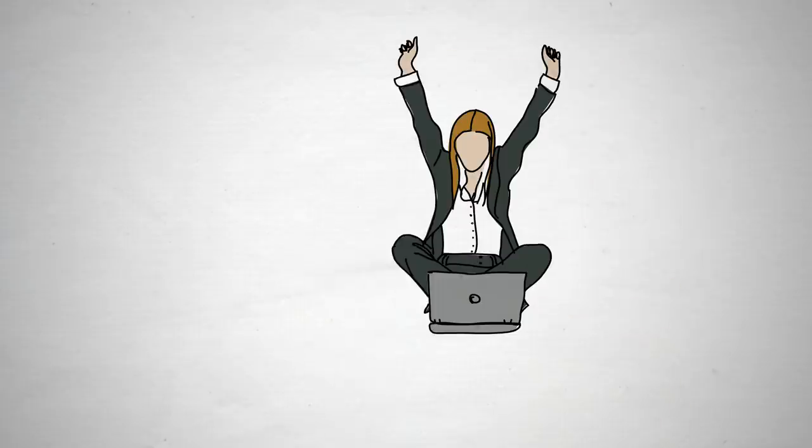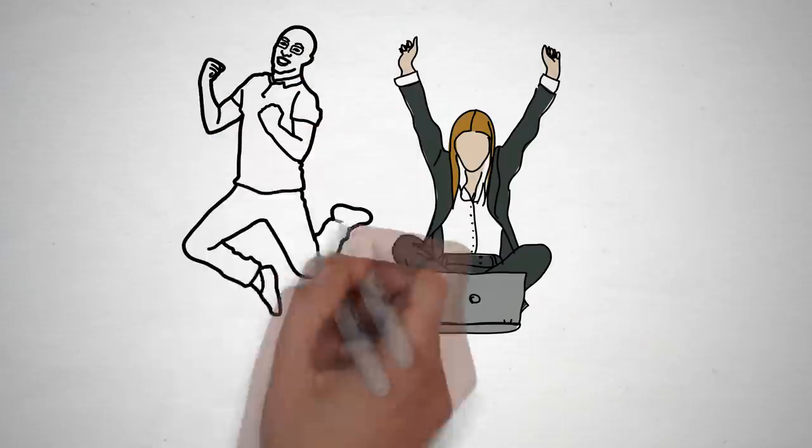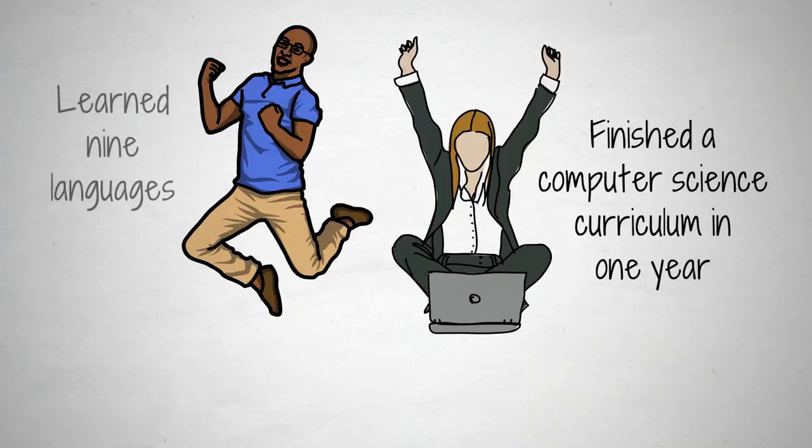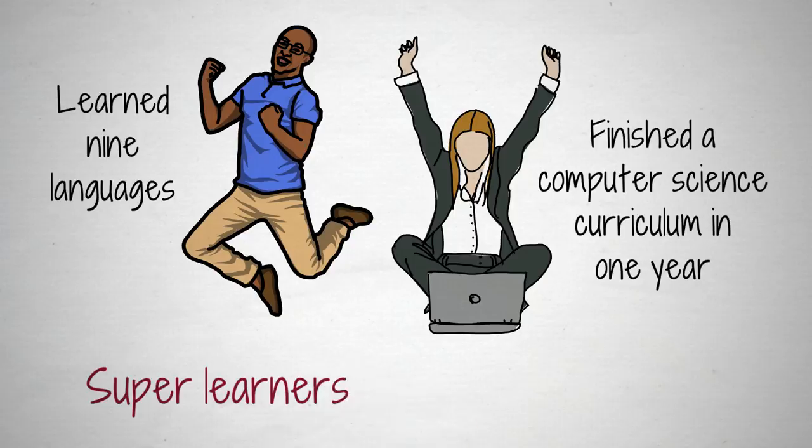By improving their learning speed, some people achieve seemingly impossible feats. One student finished the MIT computer science curriculum in one year instead of four. Another learned nine languages while touring Europe. The crazy thing is, these super learners are not born like this.